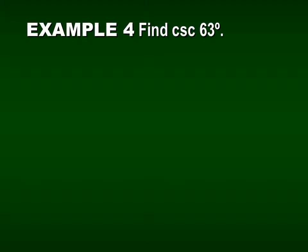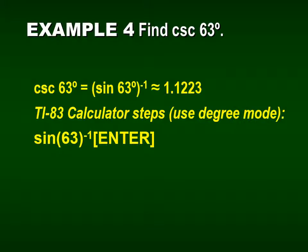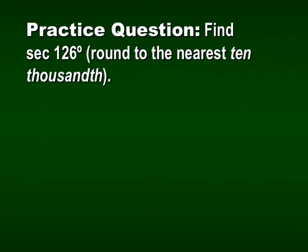Now we're going to do cosecant of 63 degrees. 63 degrees is not a special angle, so we want to use our calculator. However, there is no cosecant button. We know that cosecant is the reciprocal of sine, so if we do 1 over sine of 63, we get the same as cosecant of 63. You can also enter sine of 63 degrees and then take the inverse. Make sure you're in degree mode, and you will get your answer.